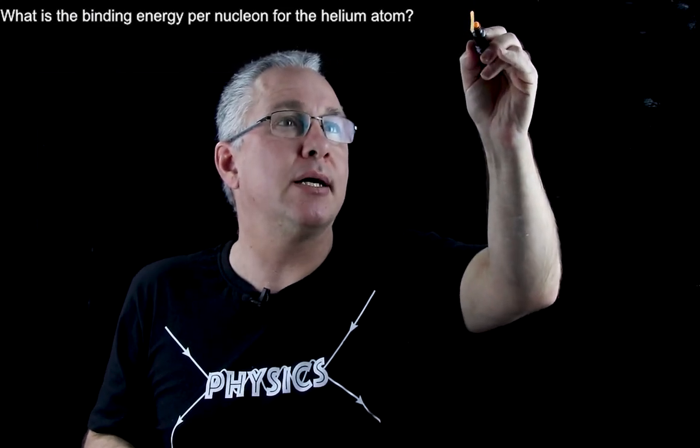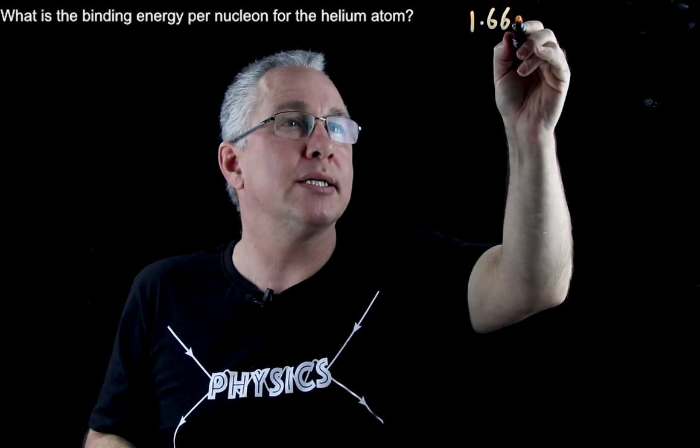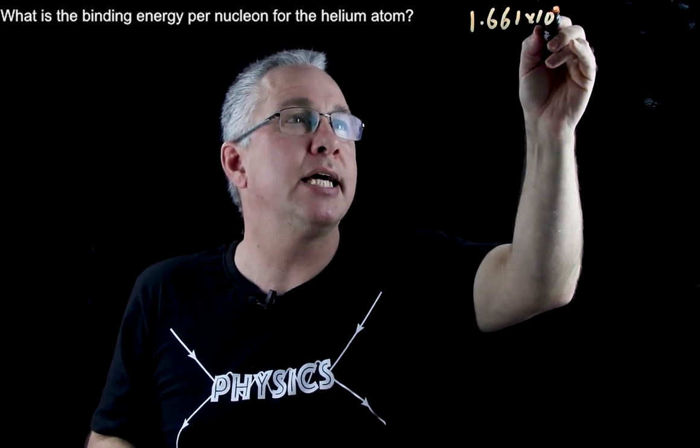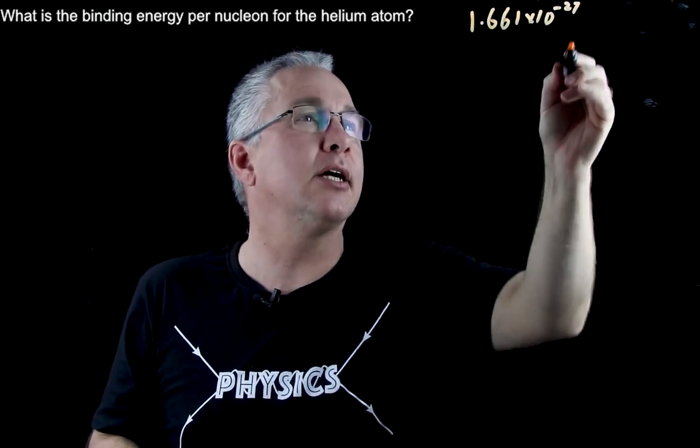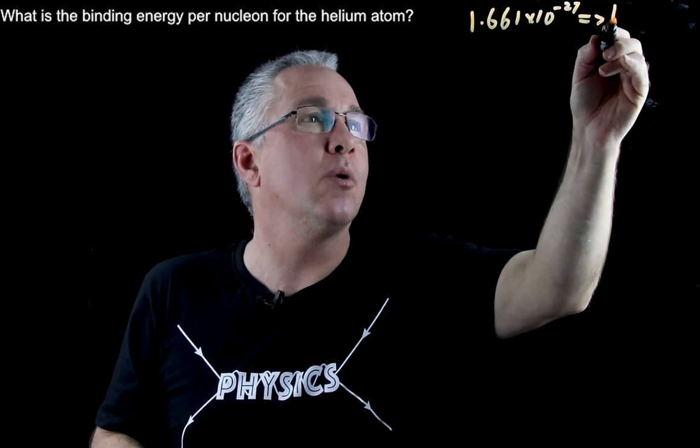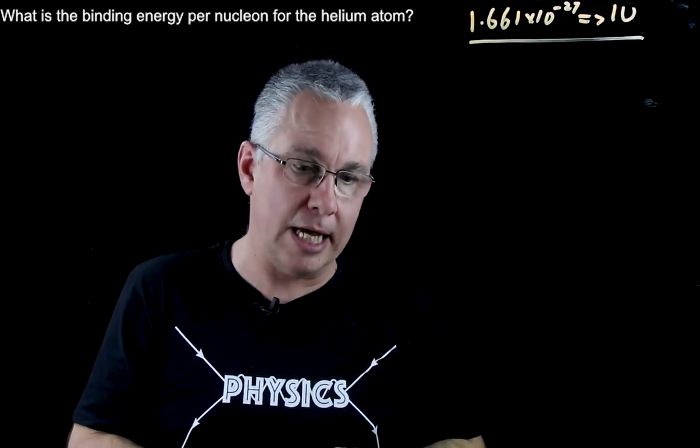So the first thing to remember is the conversion. 1.661 by 10 to the power of negative 27 kilograms is equivalent to 1u. So just that's as an aside.